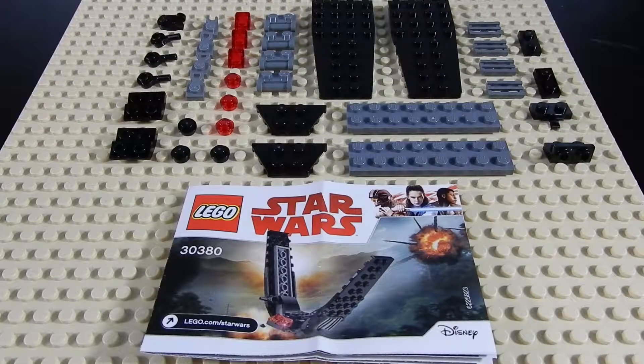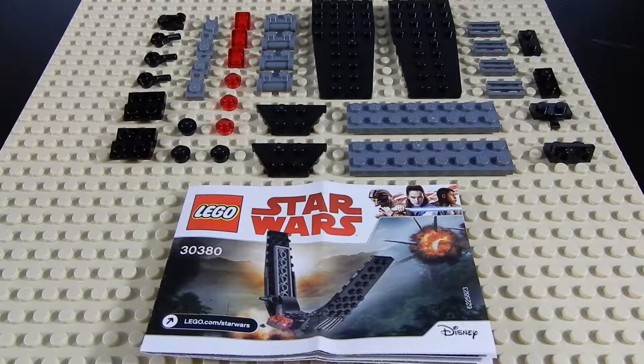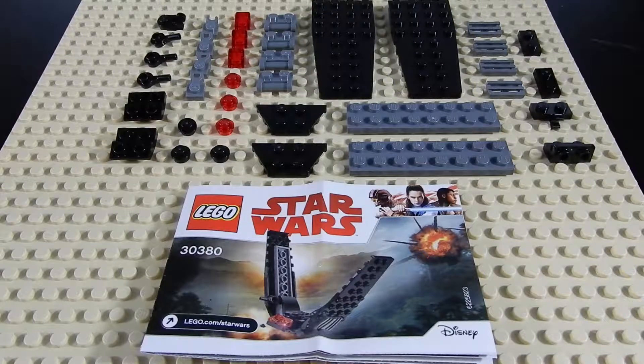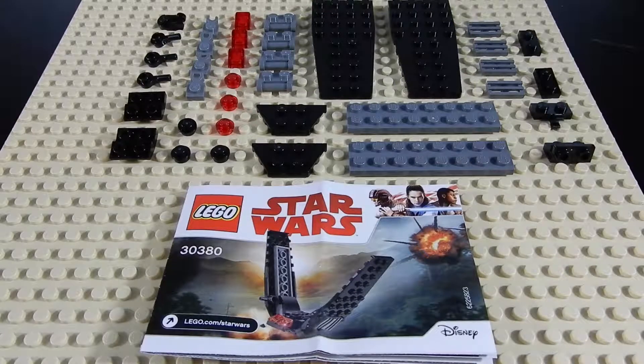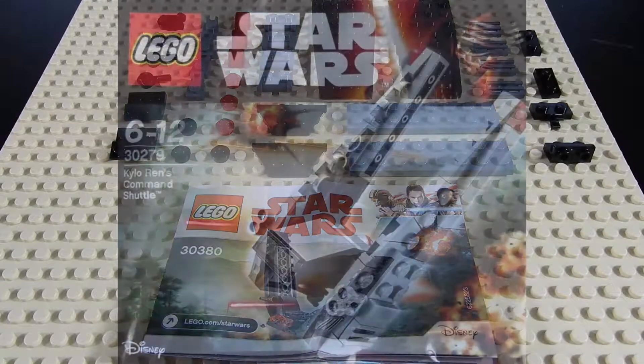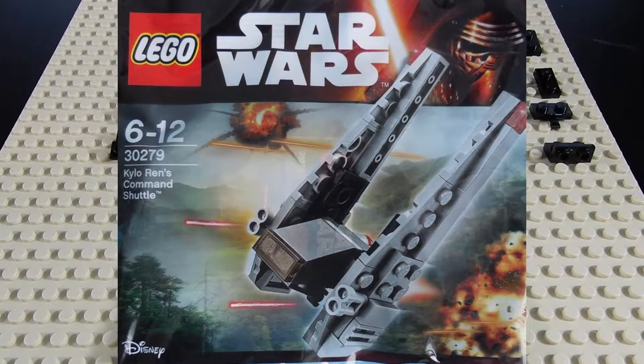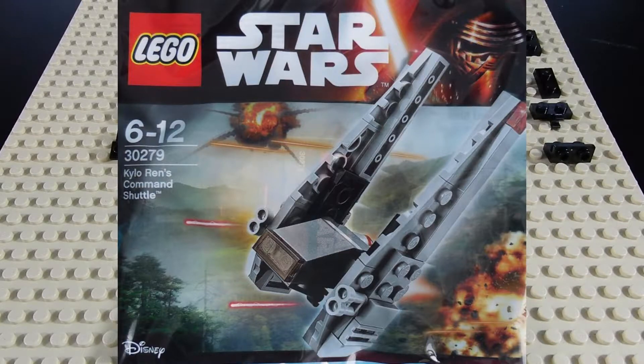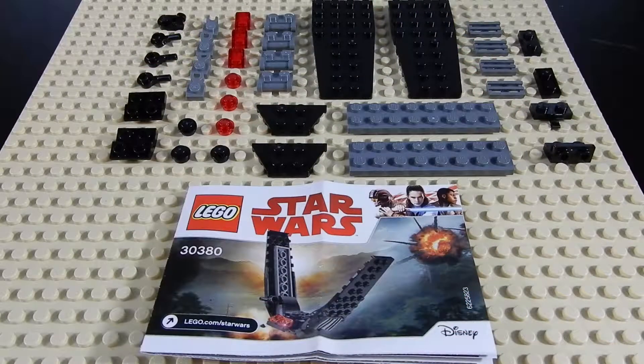This version of Kylo Ren's shuttle contains 33 pieces, unlike the last version, which had 43. Incidentally, that was set number 30279. If you want to take a look at Brick Link or Brick Set, you can take a look at the original.